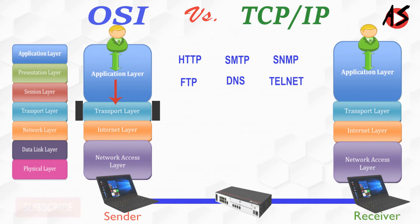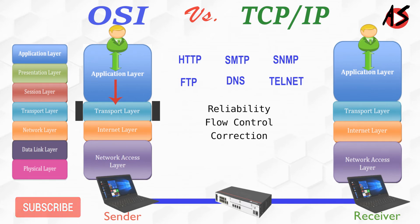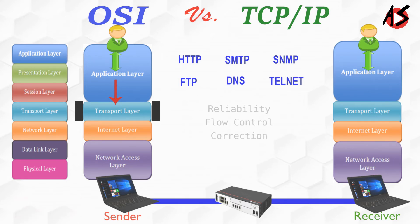The second layer in the TCP/IP model is the Transport layer. The transport layer is responsible for reliability, flow control, and correction of data being sent over the network. Two protocols are used in the transport layer: User Datagram Protocol (UDP) and Transmission Control Protocol (TCP).